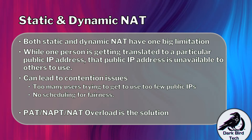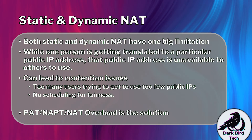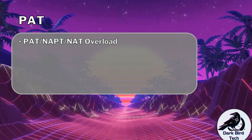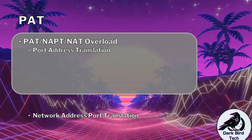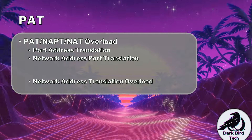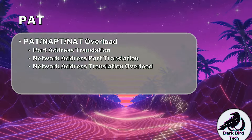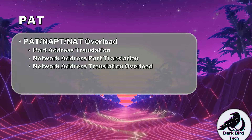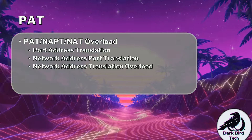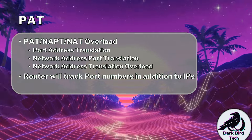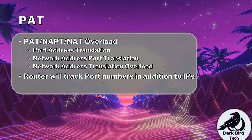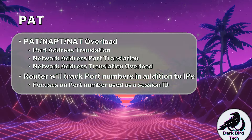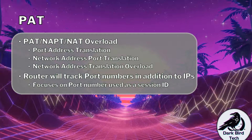Let's understand the cool option that many people tend to use. It goes by a couple of names: port address translation, network address port translation, and NAT overload — but it's the same thing regardless of which name you use. What's going to happen is the router will track the port numbers in addition to the IP addresses.